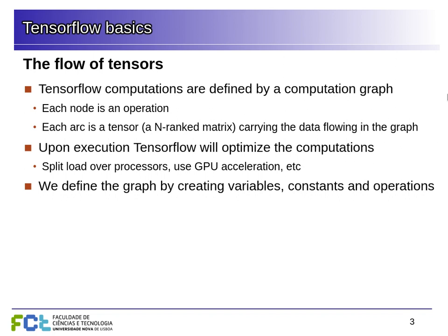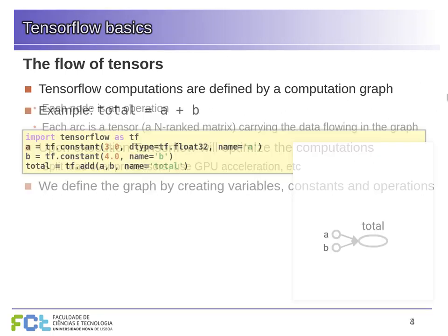We define the graph and create the variables — those are the things TensorFlow will try to adjust to minimize the target function. We can also have constants, which TensorFlow knows are not to be changed. This way TensorFlow knows exactly what it has to adjust in order to train whatever system we want to create.